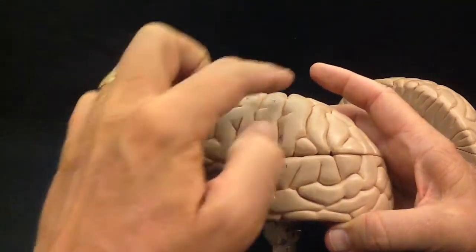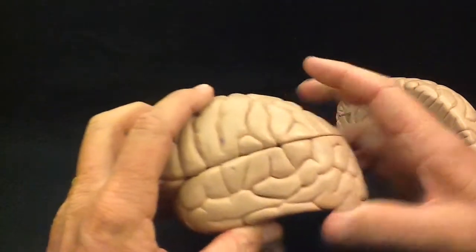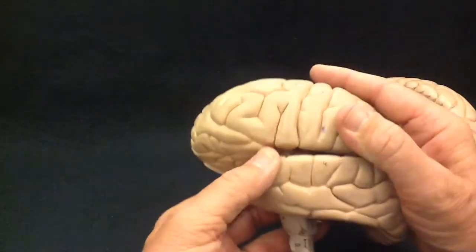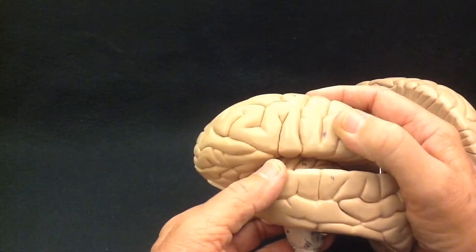This fifth lobe of the cerebrum is referred to as the insula. So you'll want to be able to identify the frontal lobe, the parietal lobe, the temporal lobe, the occipital lobe, and finally down in here, the insula.